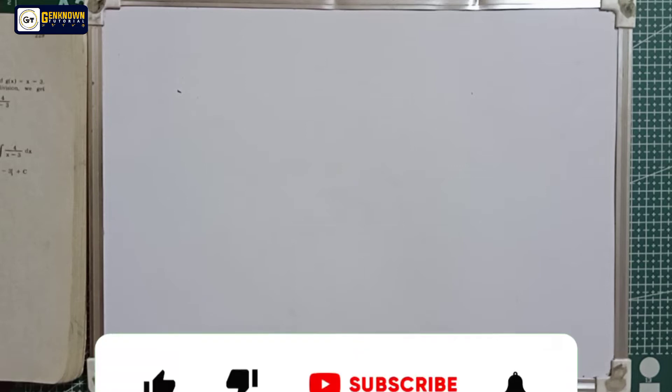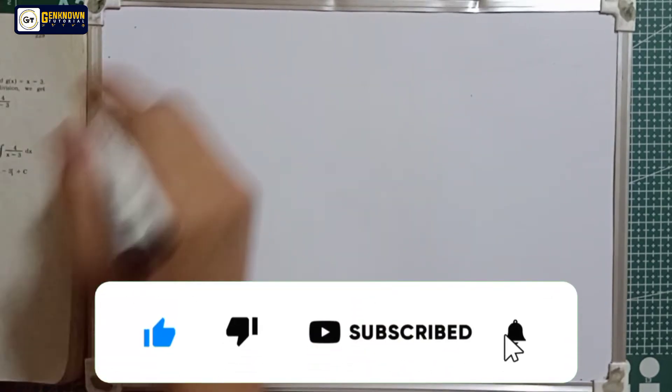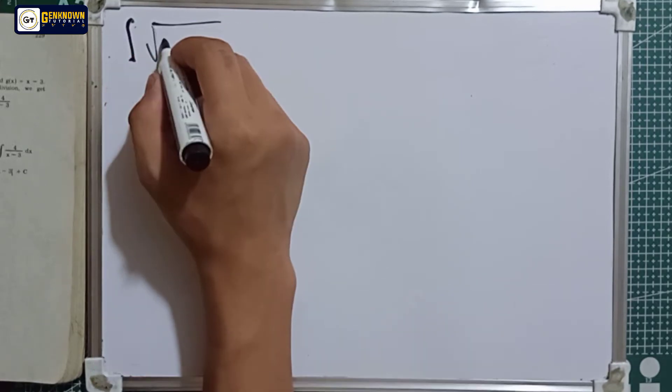Exercise 9.2: Evaluate each of the following indefinite integrals. Number one is the integral of square root of 2 minus 3x dx.